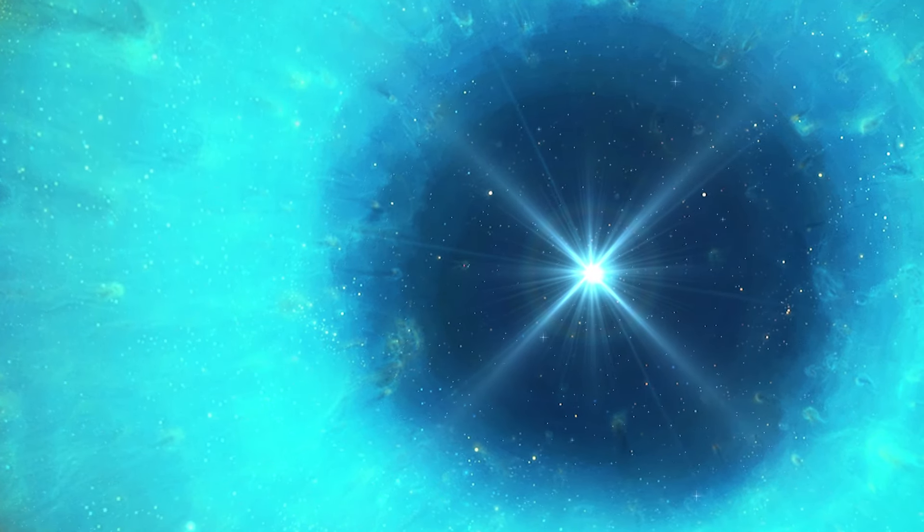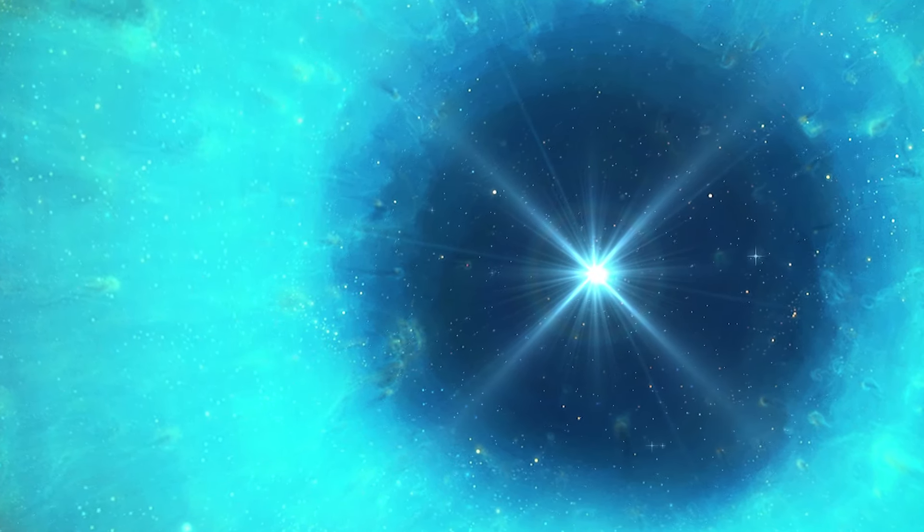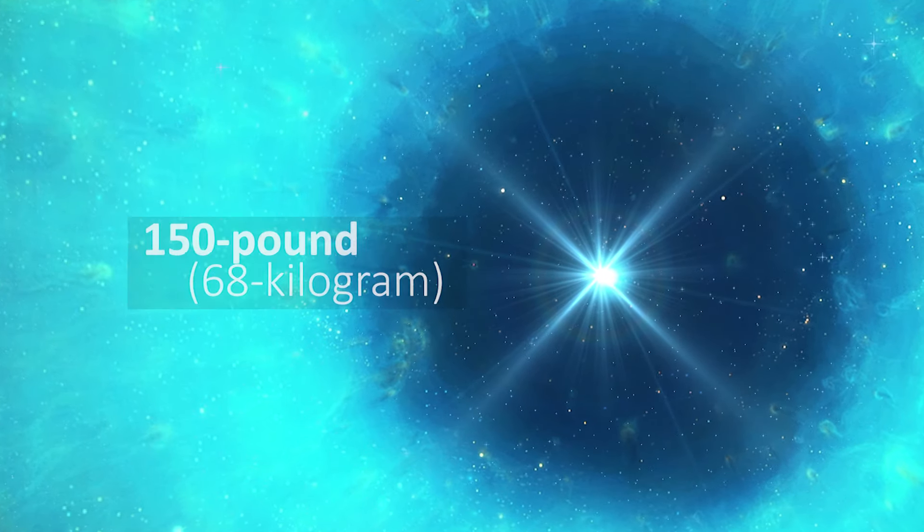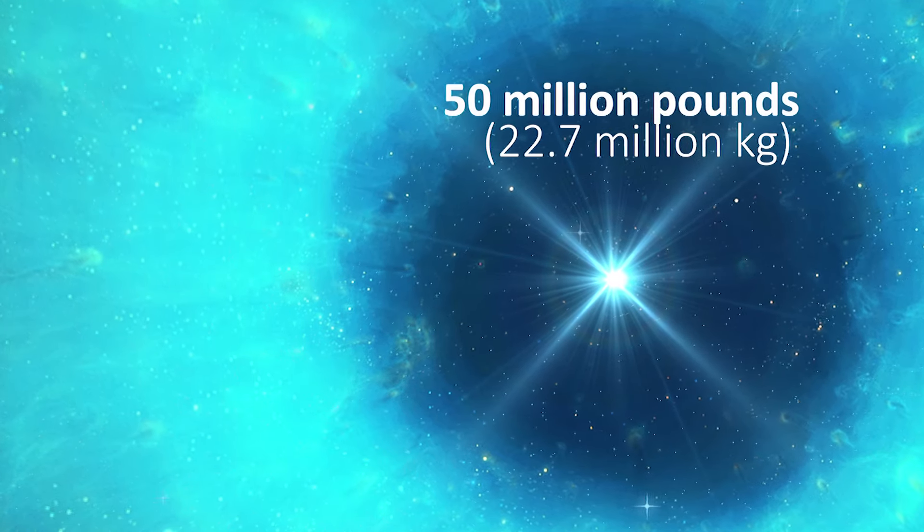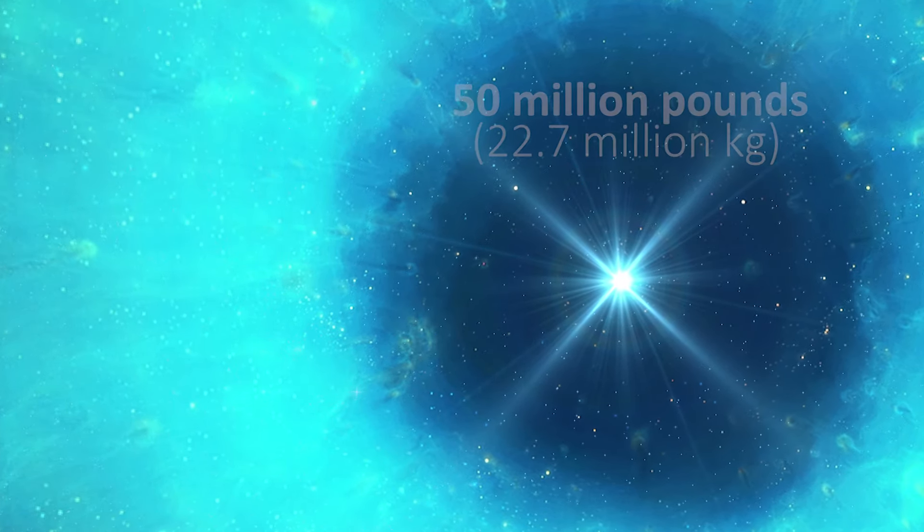According to NASA, the gravity on the surface of a white dwarf is about 350,000 times that of gravity on Earth, meaning a 150-pound person on Earth would weigh 50 million pounds on the surface of a white dwarf.